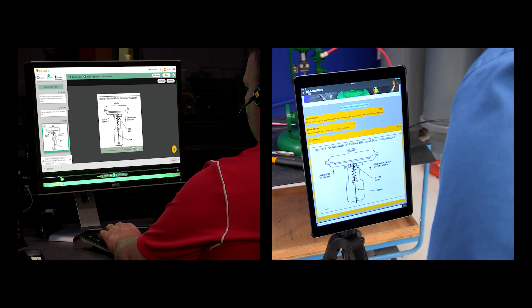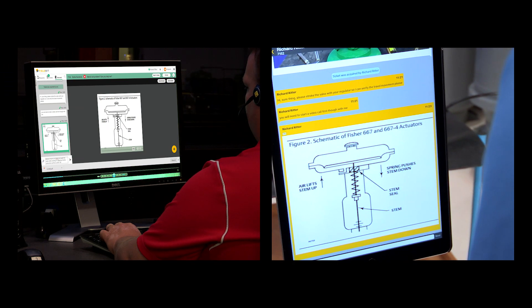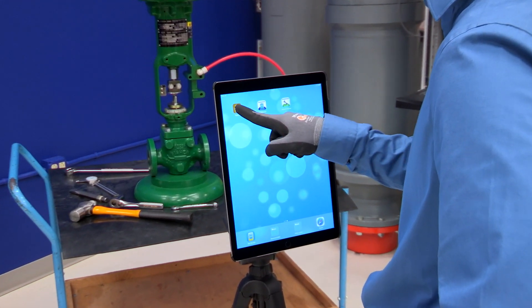What if the right information and context could be delivered to Emerson technicians by entering basic equipment information? This all becomes possible with Emerson's remote assistance program.